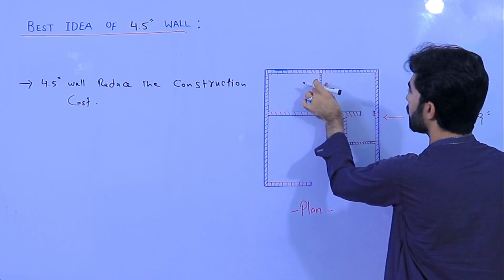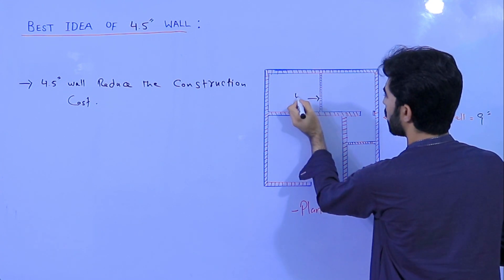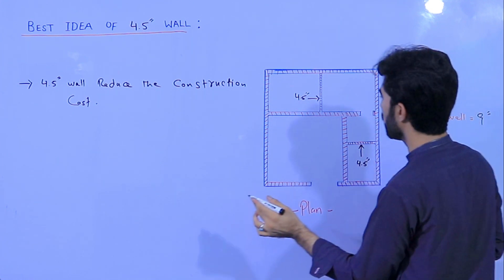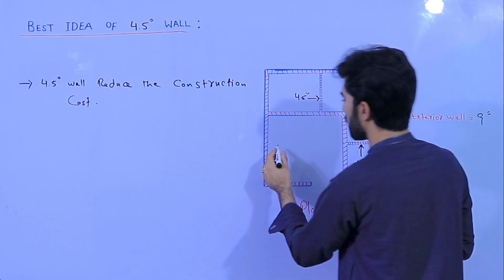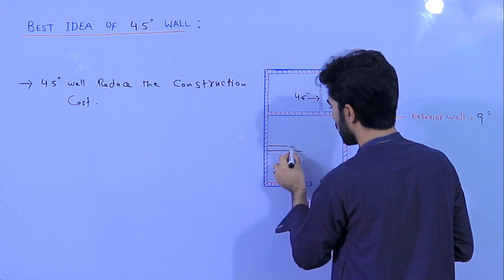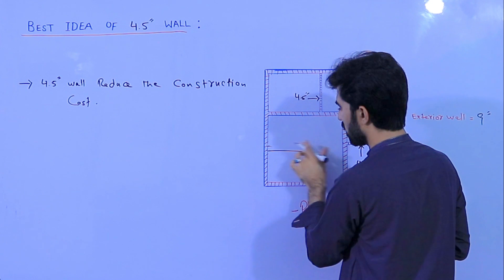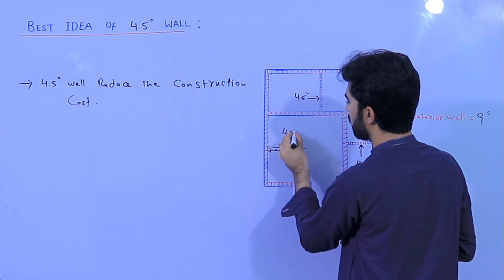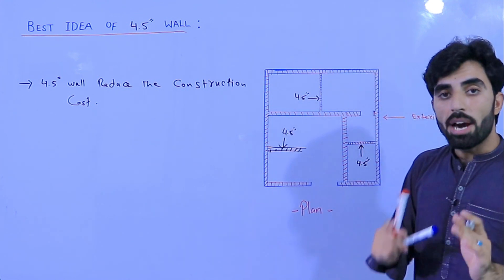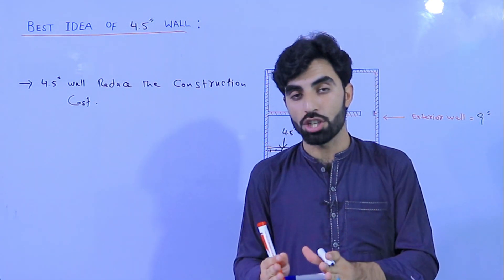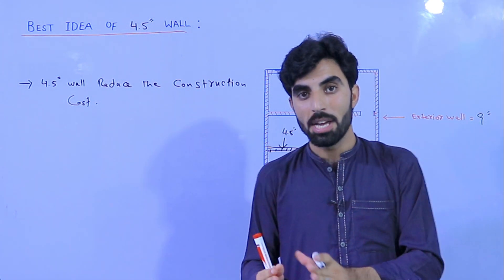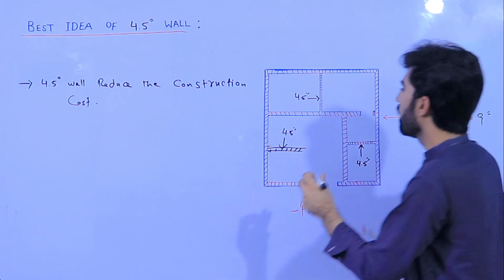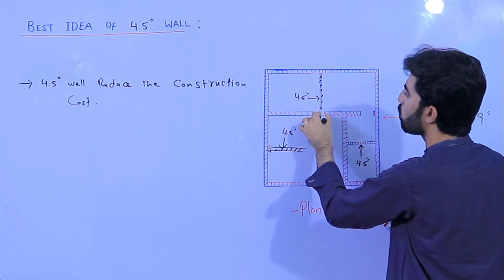As you can see, this wall is 4.5 inch, this one is 4.5 inch, and this one is also 4.5 inch. Remember, the partition walls should be 4.5 inch if you want to reduce the cost of construction, but the exterior wall should not be 4.5 inch.